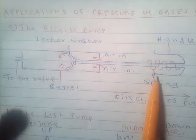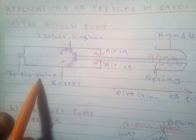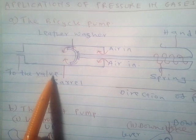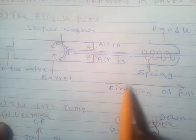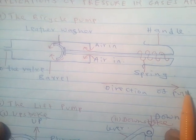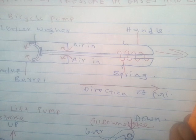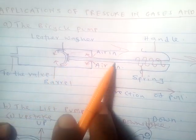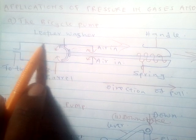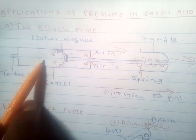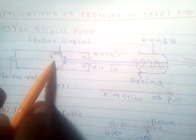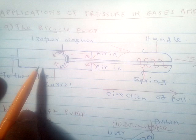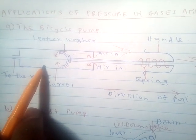Before the bicycle pump is used, we connect this end to the valve of the tire. Remember, the valve of the tire is usually made of rubber. When the handle is pulled upwards, the leather washer also moves upwards. Whenever the leather washer moves upwards, the volume of the air below the barrel increases. Therefore, the air below the leather washer in the barrel expands. Whenever air expands, its pressure reduces.